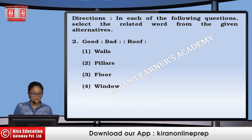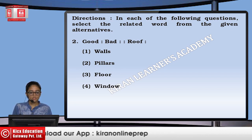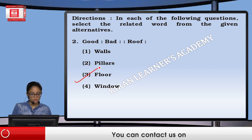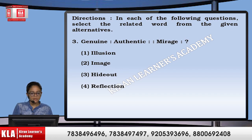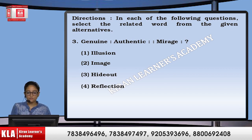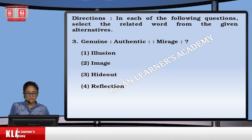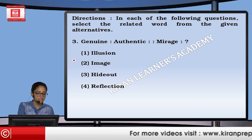Next, we have good and bad. Good and bad are opposites to each other. Similarly, what is opposite to roof is flow — that is option number three. Next, genuine is to authentic — the thing which is genuine, you can believe and trust it. Similarly, mirage is related to illusion.